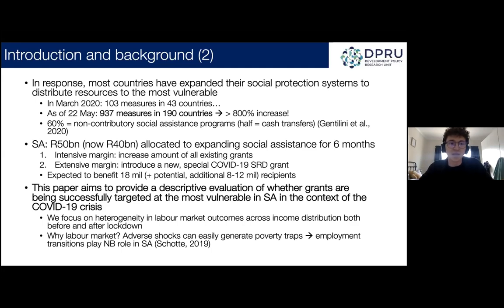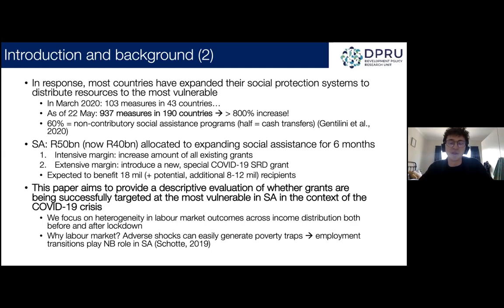In South Africa, social assistance programs have been expanded for six months along both the intensive and extensive margins. The intensive margin involved increasing all existing social grants by about 250 Rand, except for the child support grant. Along the extensive margin, a new special temporary COVID-19 social relief of distress grant was introduced. This is expected to benefit about 18 million existing grant recipients plus an additional 8 to 12 million people.